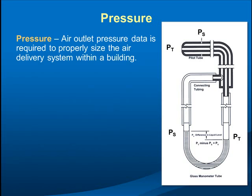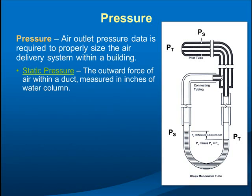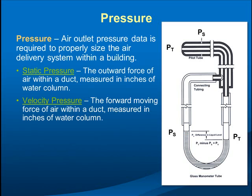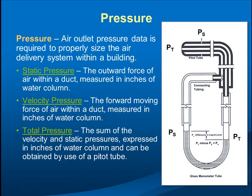We need air outlet pressure data to size the fan and ensure enough pressure reaches the diffuser at full airflow to deliver the required cooling. Static pressure is the outward force of air within the duct; velocity pressure is the forward-moving force; and total pressure is the sum of the two. The equation is: p_t = p_v + p_s. Most people today design with static pressure, but theoretically you should use total pressure. You need enough static to get the air through the diffuser.